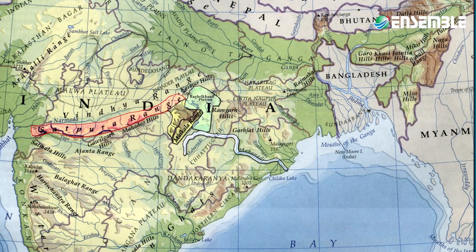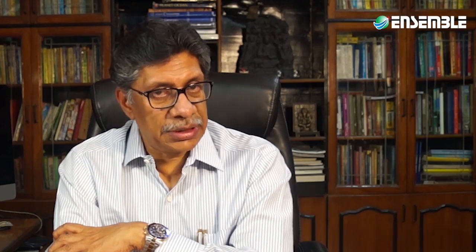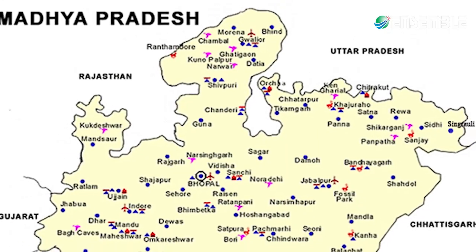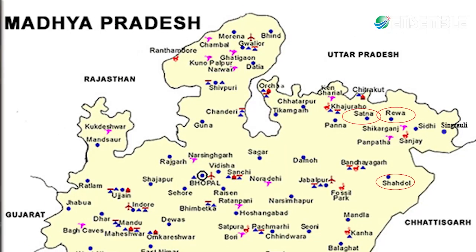The Bahilkhan Plateau is surrounded by the Indo-Gangetic Plains in the North and East, Bundelkhand in the West, and the Mahikal range in the South, bounded by the Son River on the North. It includes the Madhya Pradesh districts of Rewa, Satna, Shahdol, Sidhi, and Singh Rawali, and Chitrakoot of Uttar Pradesh.